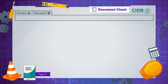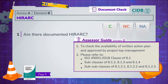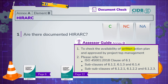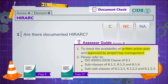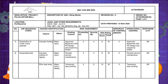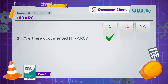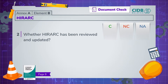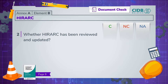Element B: Hazard identification, risk assessment, and risk control. Ask for a documented action plan which is approved by the project top management in relation to HIRAC. If it's available, check to see if there have been regular reviews done by the SHC and updates made to them.